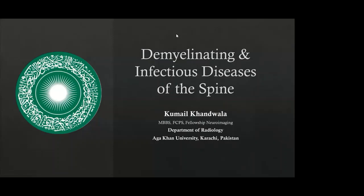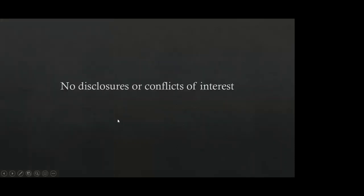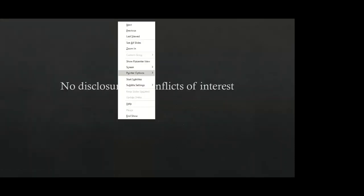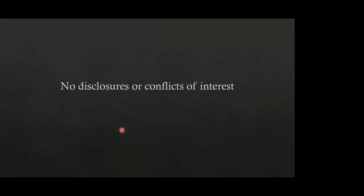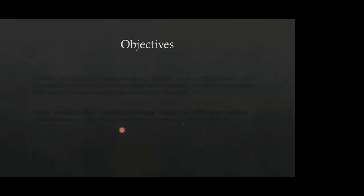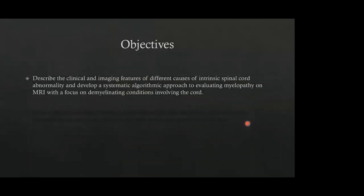The topic of this presentation is demyelinating and infectious diseases of the spine. There are no conflicts of interest or disclosures. The objectives are to describe the clinical and imaging features of different causes of intrinsic spinal cord abnormality and to develop a systematic algorithmic approach to evaluating myelopathy on MRI with focus on demyelinating conditions involving the cord.